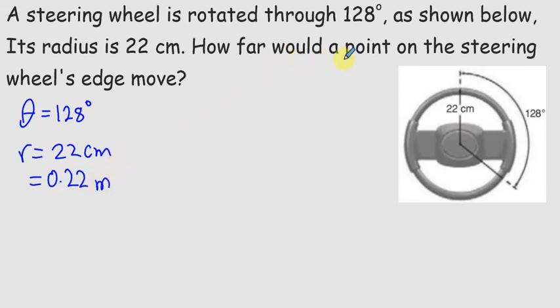How far would the point on a steering wheel's edge move? So we are looking for delta x, the unknown of this equation. Easy. The formula we are going to use is delta x equals r times delta theta.